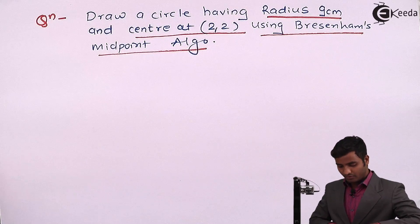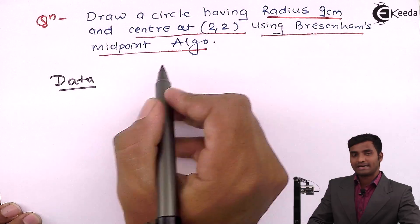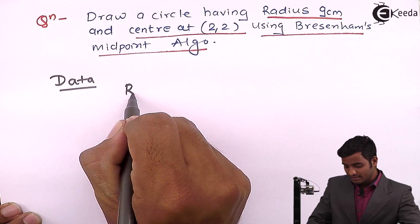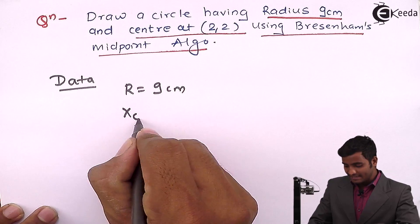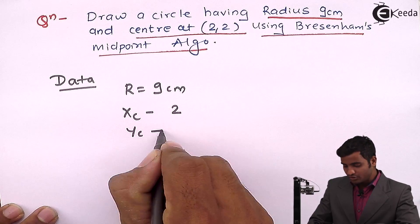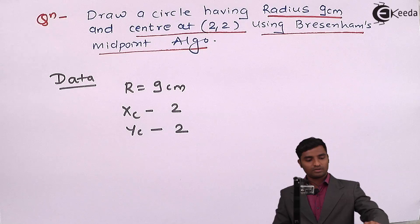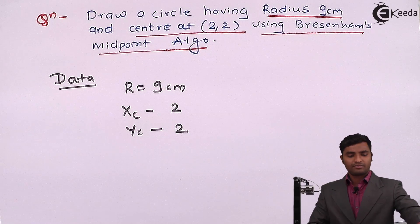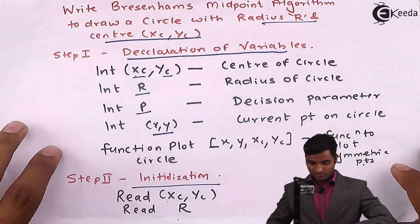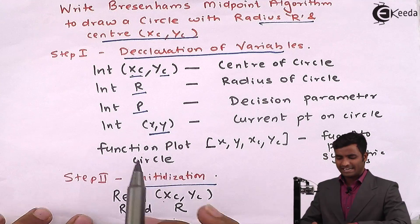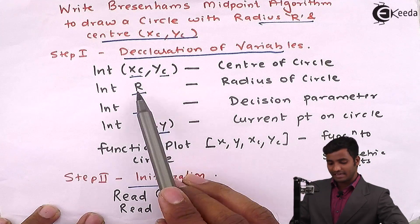Given data for this problem: radius is 9 centimeter, Xc is given as 2 and Yc is also 2. We will refer to the algorithm steps. For declaration of variables, we already have Xc, Yc and R, and we require P.